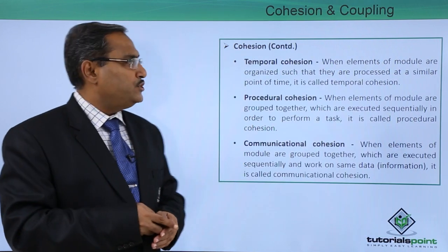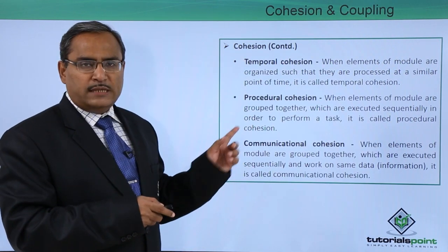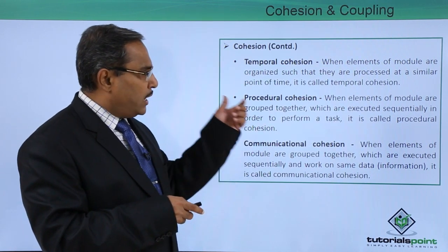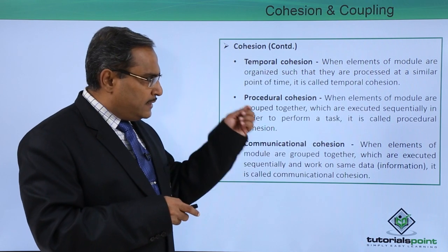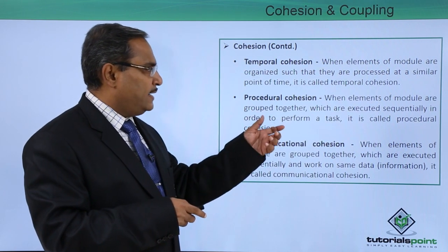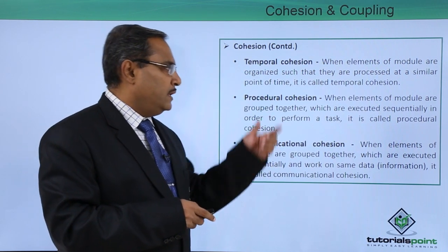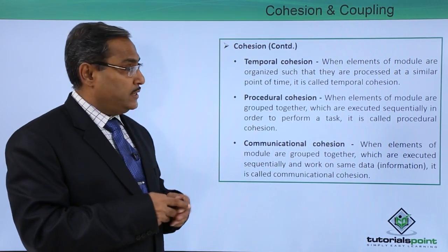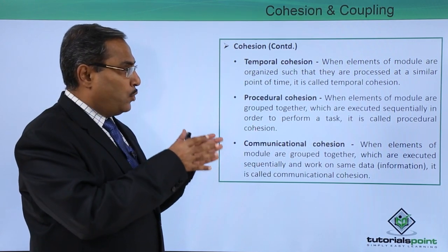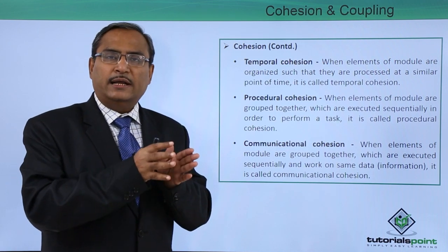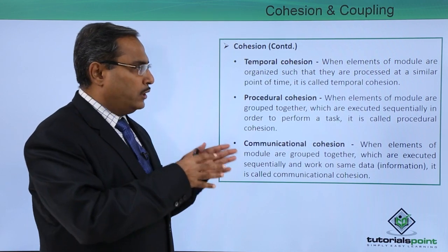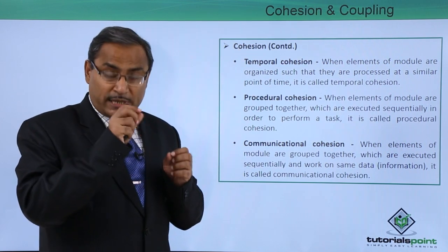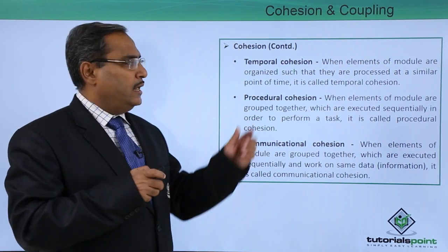The next type is temporal cohesion. When elements of a module are organized such that they are processed at a similar point in time, it is called temporal cohesion. That means the elements of a module are organized so they will be executing or processed at the same point in time — hence the name temporal cohesion.